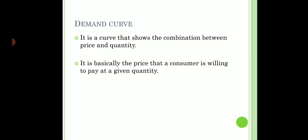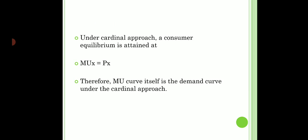Under the cardinal approach, the condition of equilibrium is that the marginal utility of X should be equal to the price of the commodity. That is the point of consumer equilibrium. So by changing the price of the commodity, we can easily find the various points of consumer equilibrium, and by joining those points we can find the demand curve.